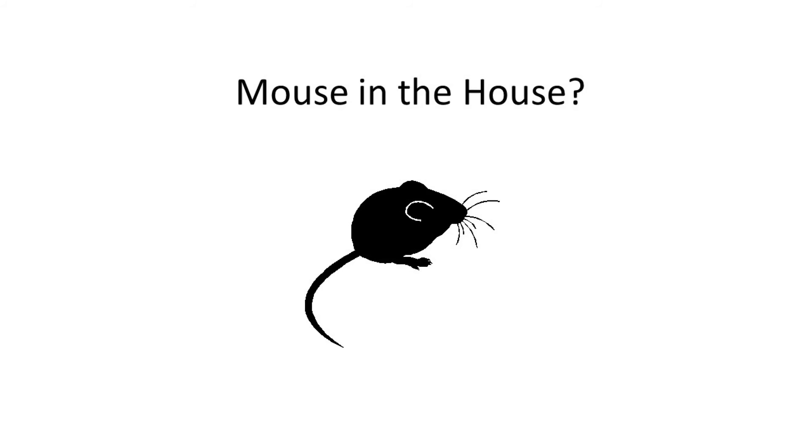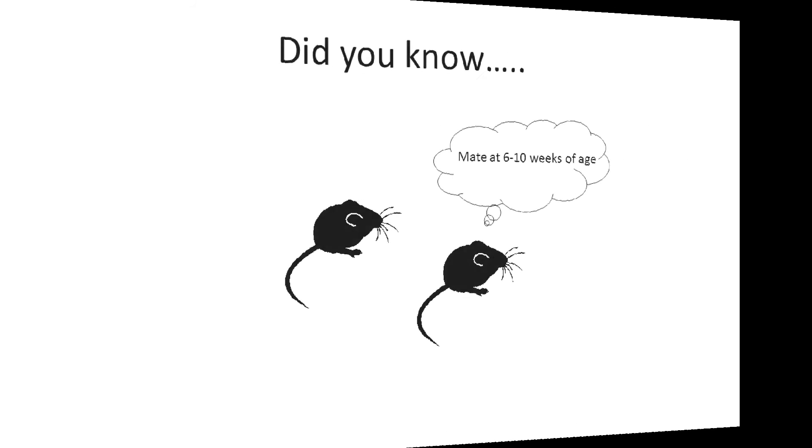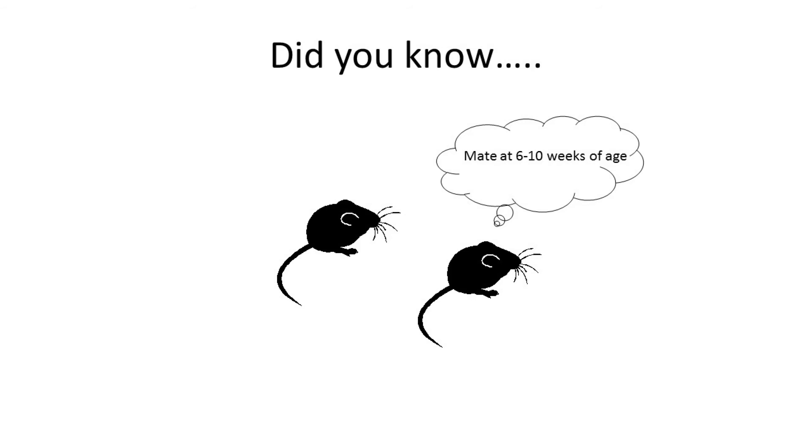Do you have a mouse in the house? You may want to think again. Were you aware that mice mate at 6 to 10 weeks of age? And where there's one, there's certainly another.